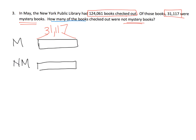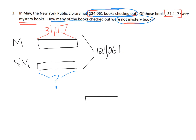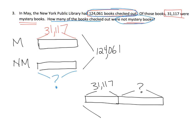If I continue reading — how many of the books checked out were not mystery? — that means this number we don't know; that's the not mystery. And the big number is the total: 124,061. That's one way to draw a tape diagram, and then we subtract. Another way is side-by-side: mystery is 31,117, not mystery is a question mark, and the total is 124,061. We have our choice of stacked method or the side-by-side method.